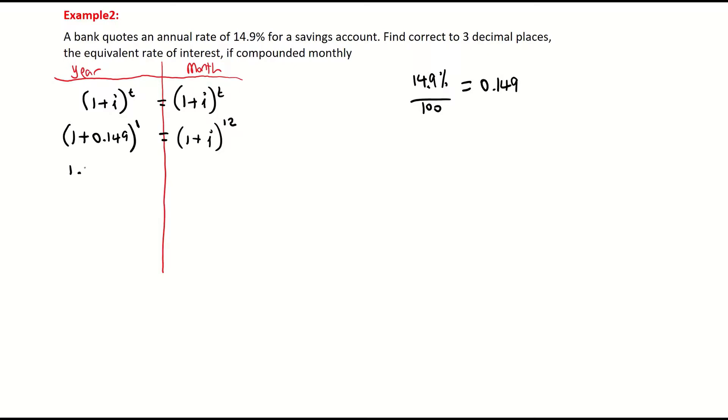So I add these together. I get 1.149 equals (1 + i)^12. Now in the previous example, I showed you a way of getting rid of the 12 by multiplying it by the power of one twelfth. But I'm just going to use the square root method, the root method for this one. And instead of the square root, which is to the power of two, we're using the 12th root. So the 12 and 12th root will cancel each other out. You have to do it to both sides. Whatever you do to the right, you must do to the left. So that leaves me with 1 + i for my month.